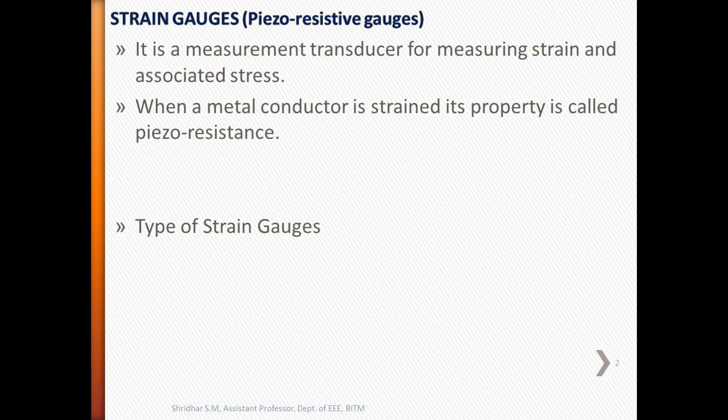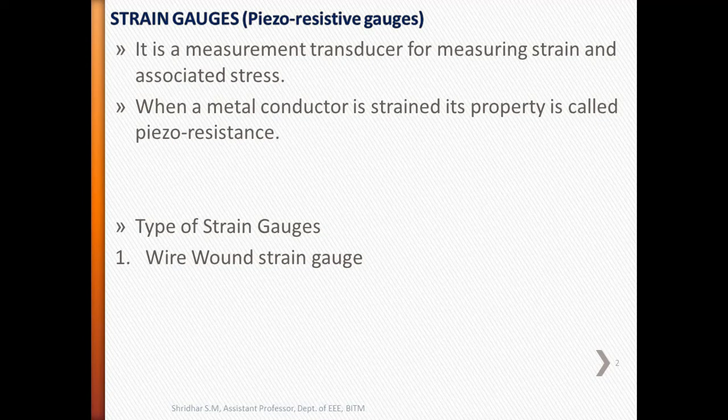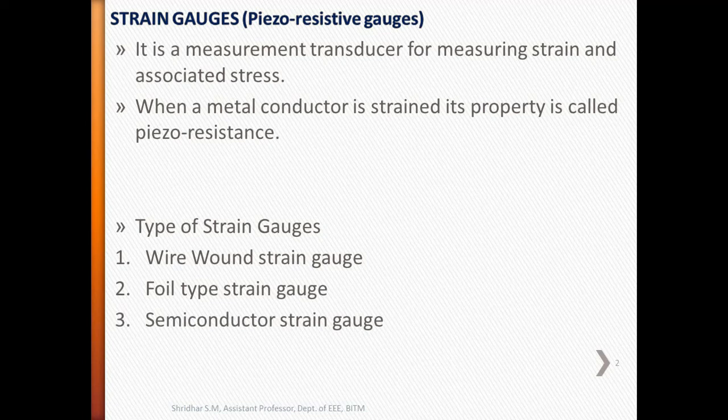There are four types of strain gauges: wire wound strain gauge, foil type strain gauge, semiconductor strain gauge, and capacitive strain gauge.